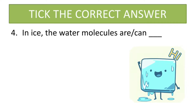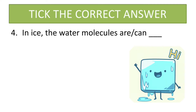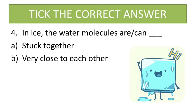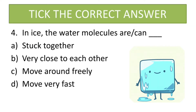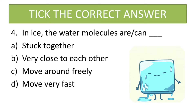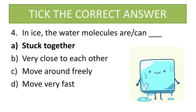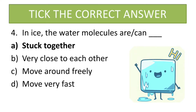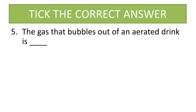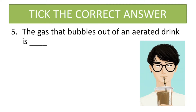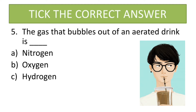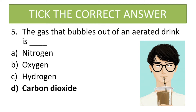Fourth question: in ice, the water molecules can — options are stuck together, very close to each other, move freely around, or move very fast. The correct answer is stuck together; they are very much in contact with each other since it is a solid state. Fifth question: the gas that bubbles out of an aerated drink is — nitrogen, oxygen, hydrogen, or carbon dioxide. The answer is carbon dioxide.